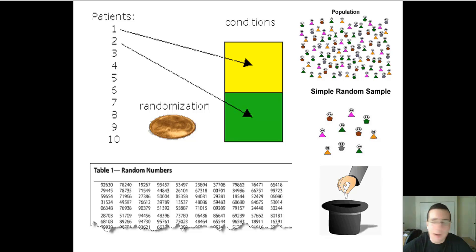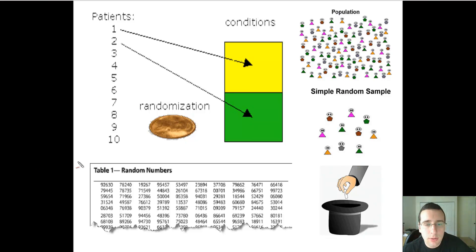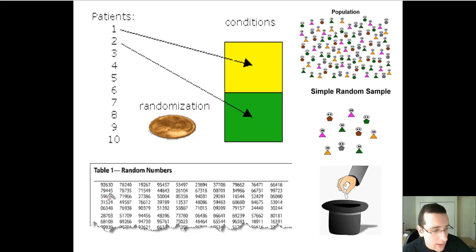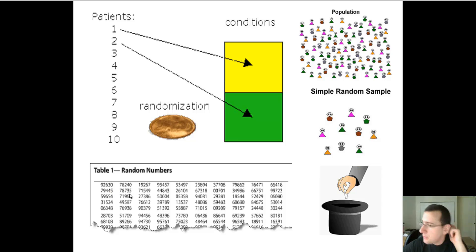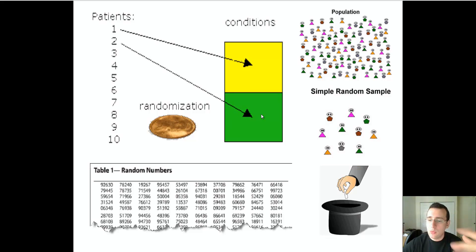Or you can use a random numbers table. For example, let's say you have nine groups — you follow along the table starting on line two, number five. The first person goes to group five, the second to group seven, then group eight, then group seven again, then group three. What you're doing is using a computer program to generate random numbers and then sorting people into the different groups. Good software has different ways to create randomness.